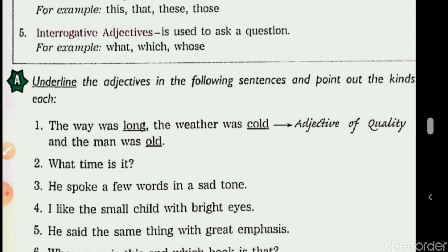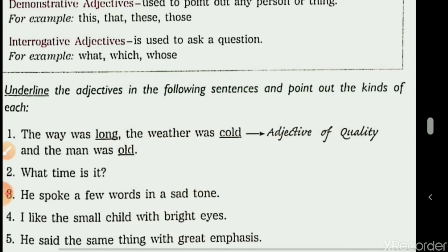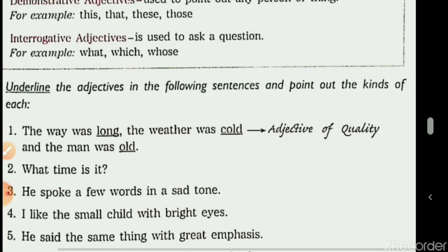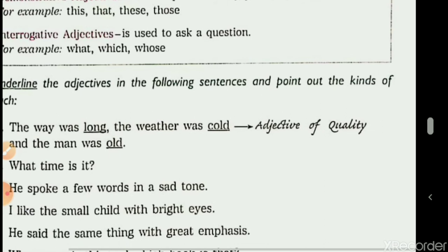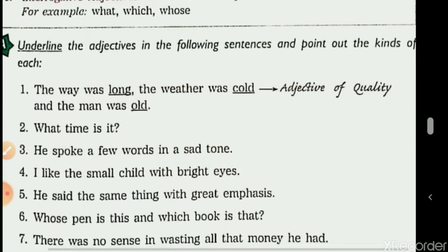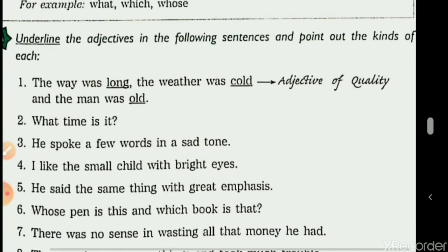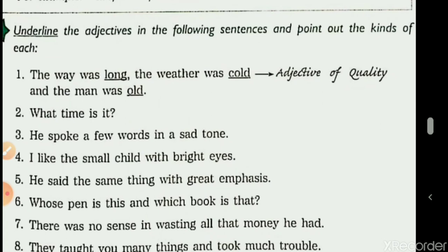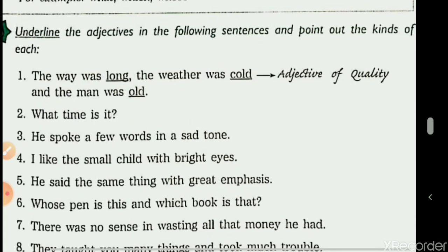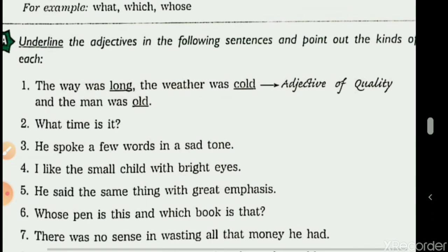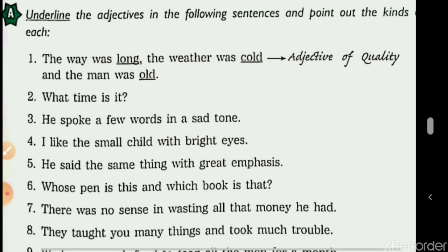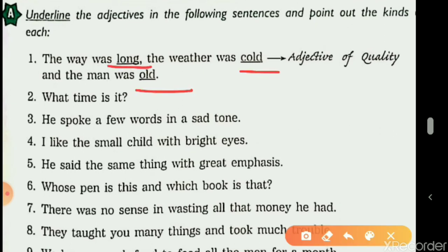Now let's revise Exercise A: Underline the adjective in the following sentences and point out the kind of each. The first sentence has been done. 'The way was long. The weather was cold. And the man was old.' In this sentence there are three adjectives: long, cold, and old.